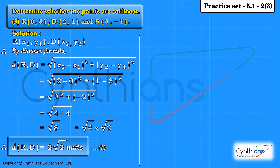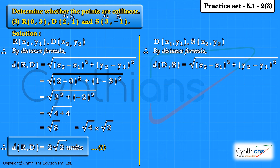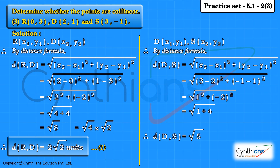Now let's take the next set of points: D and S. Let's say coordinates for point D as x1, y1 and coordinates for point S as x2, y2. By distance formula, distance of D-S equals square root of (x2 minus x1) whole square plus (y2 minus y1) whole square. Substituting: square root of (3 minus 2) whole square plus (-1 minus 1) whole square, equal to square root of 1 squared plus (-2) squared, equal to square root of 1 plus 4, equal to square root of 5 units. Mark it as equation number 2.